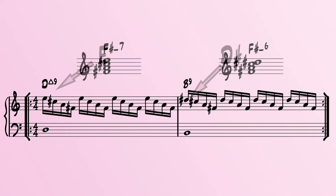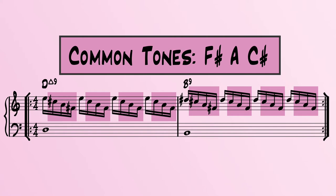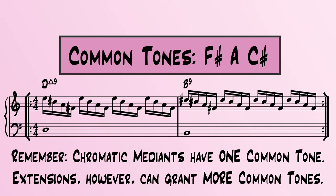Those changing pitches are E to D sharp at the top of the ostinato, and D to B in the bass motion at the bottom. Following this, we only hear common tones — those being F sharp, A, and C sharp. And because we have gone from having one common tone in a chromatic mediant to now having three common tones because of extensions, I get this sense of floating back and forth between the two chords.